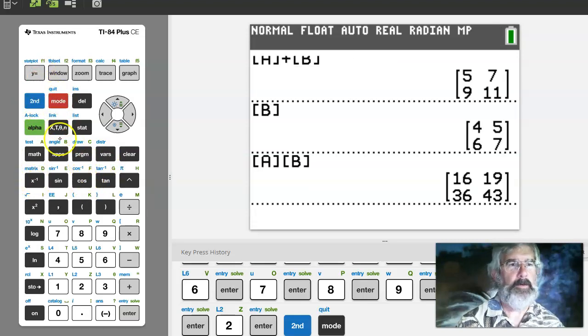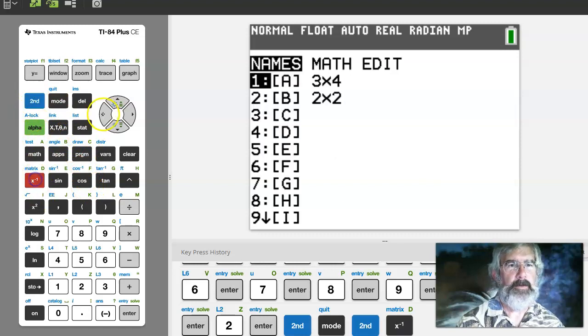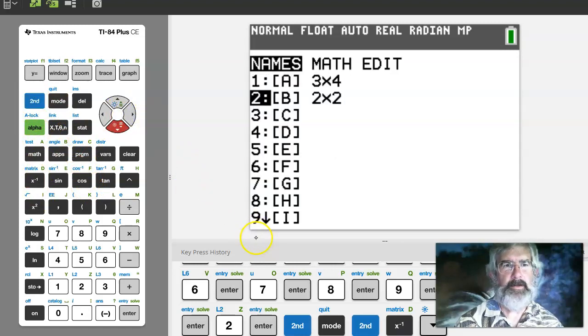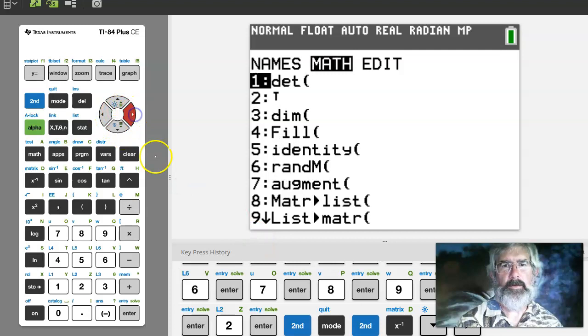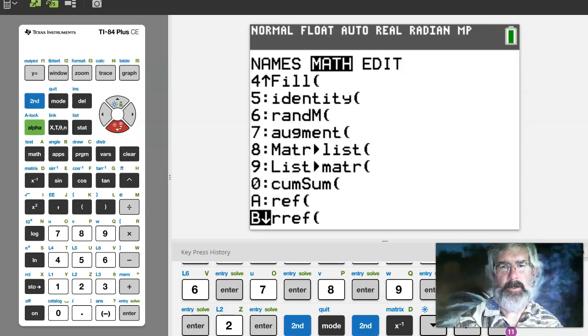Now on the home screen what I want to do is I'm going to go to matrix, move over to math, and then move down to A and B here are row echelon form and reduced row echelon form.